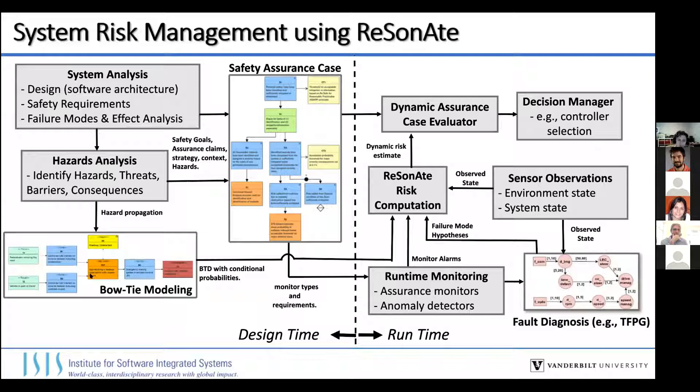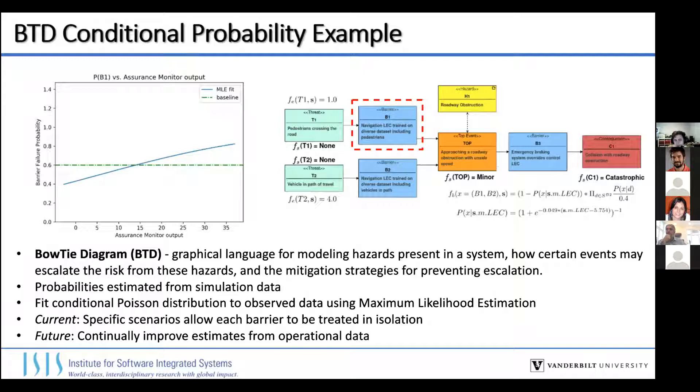We then send all this information to the RESONATE runtime risk computation component. At runtime, it takes in the bowtie models as well as other observations — such as sensor observations, hypotheses about fault modes that may be present, and any other runtime monitors available — and from all of that, along with the conditional probabilities in the bowtie model, it calculates a dynamic risk estimate that you can use to make decisions.